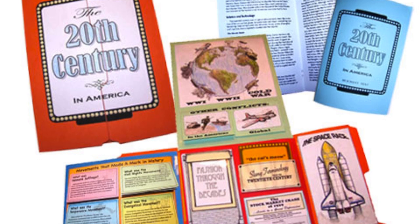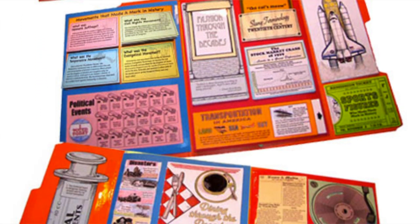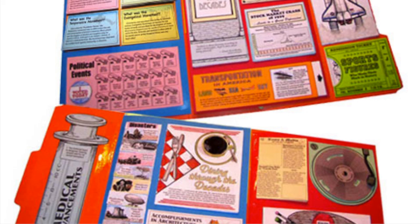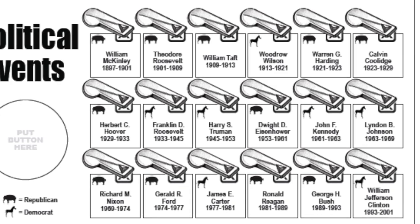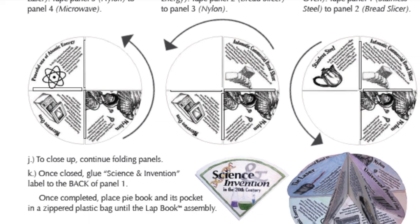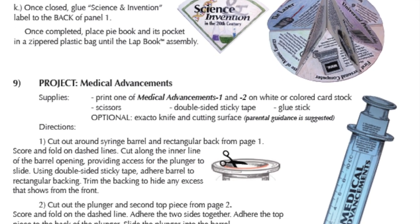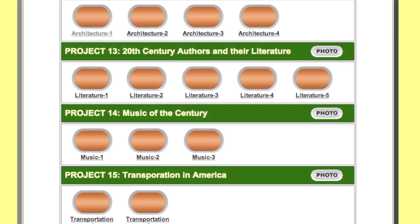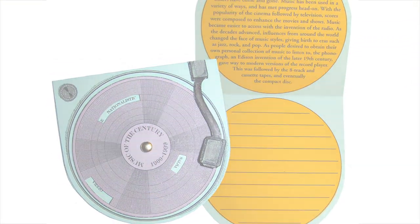Each lap pack has a number of lap booking projects that incorporate creative writing, coloring, drawing, research, and more. Beautifully detailed masters are provided for all of the printable projects, and step-by-step illustrated directions contain printing and assembly instructions for the text booklet, each project, and the lap book assembly. The menu also contains photos to aid you in viewing the finished projects.